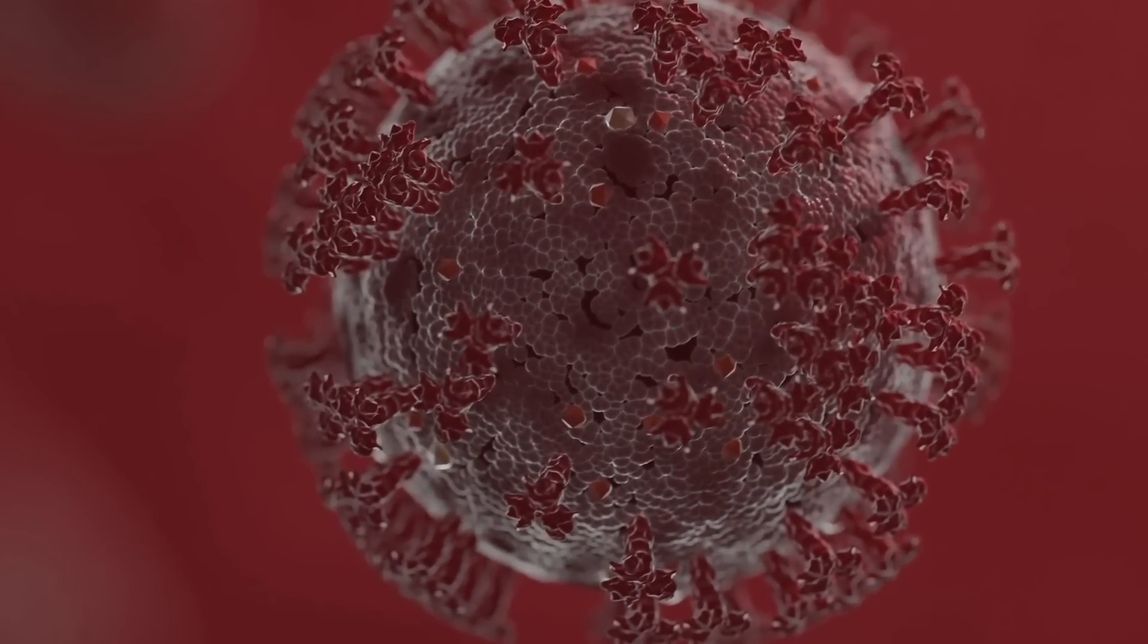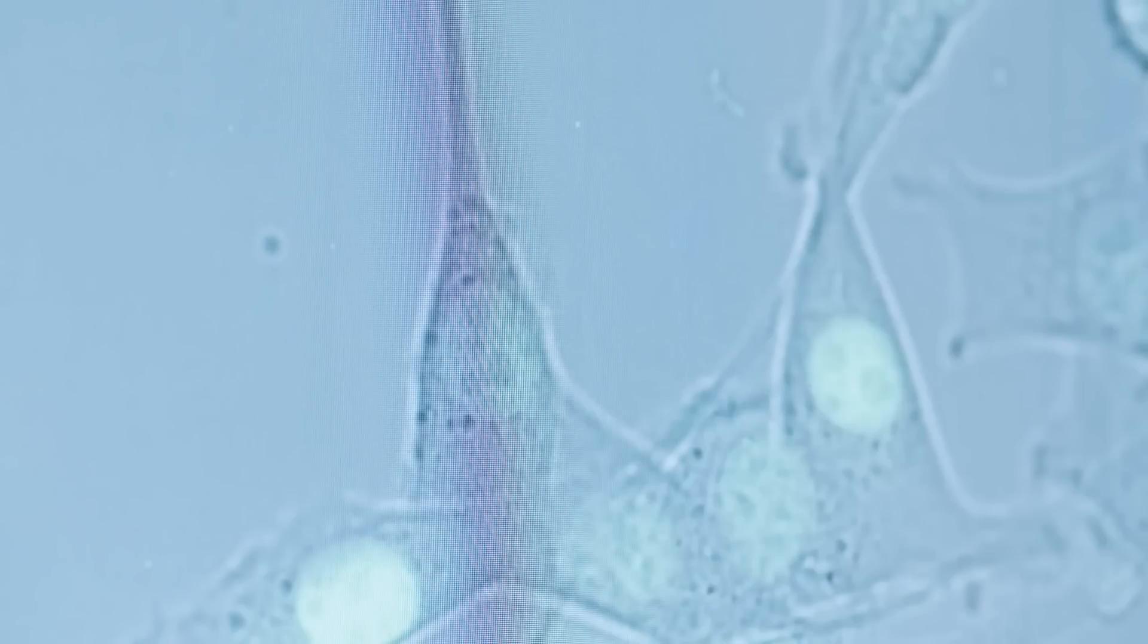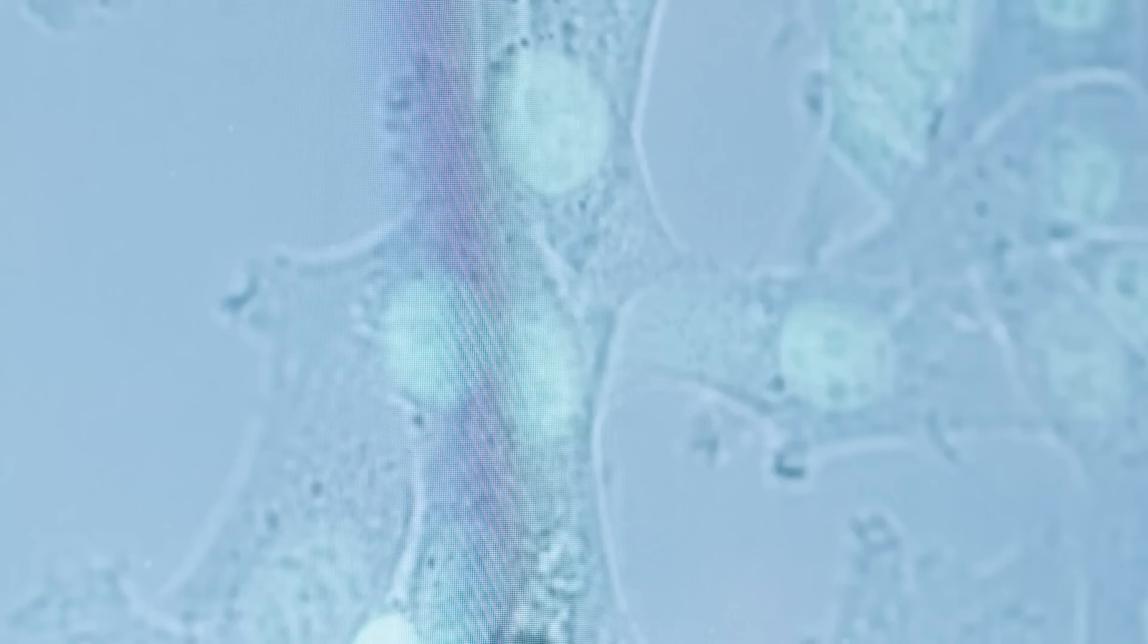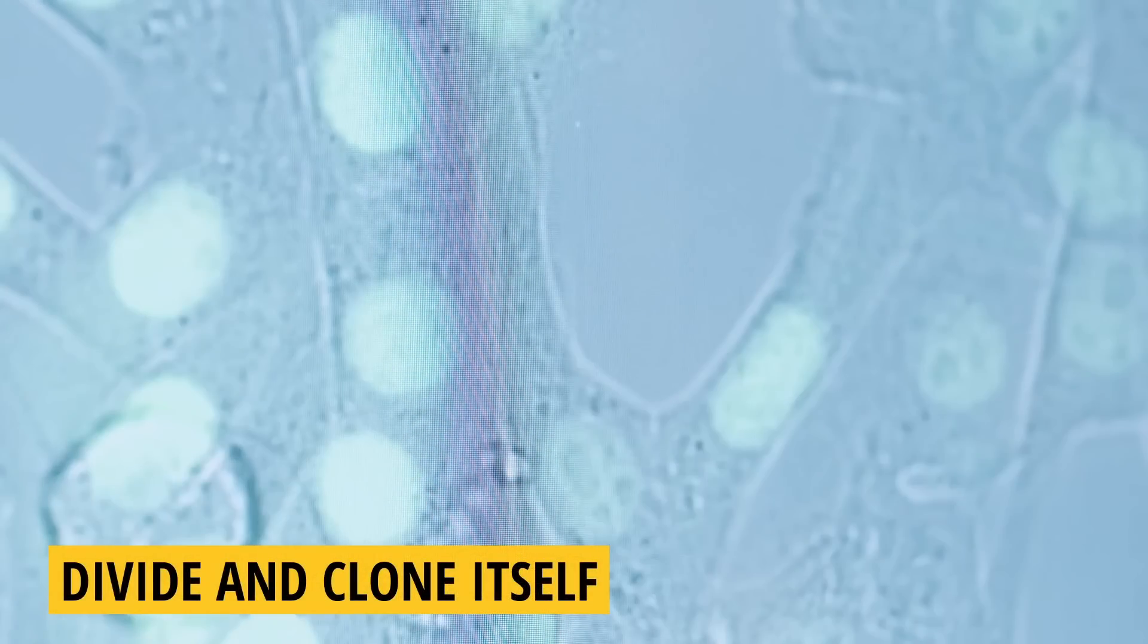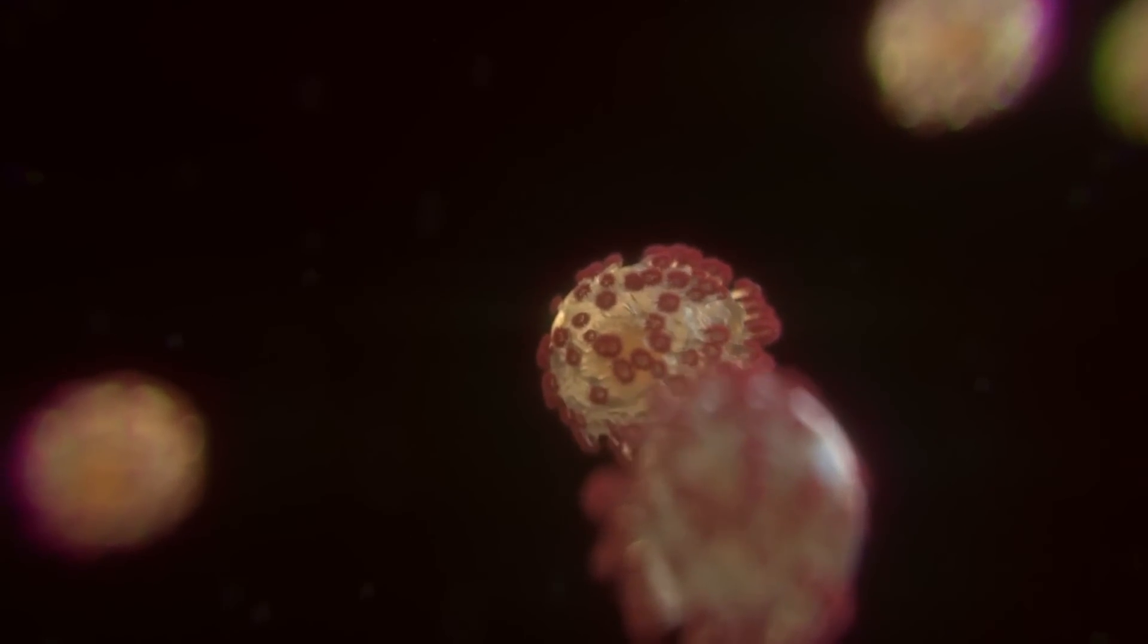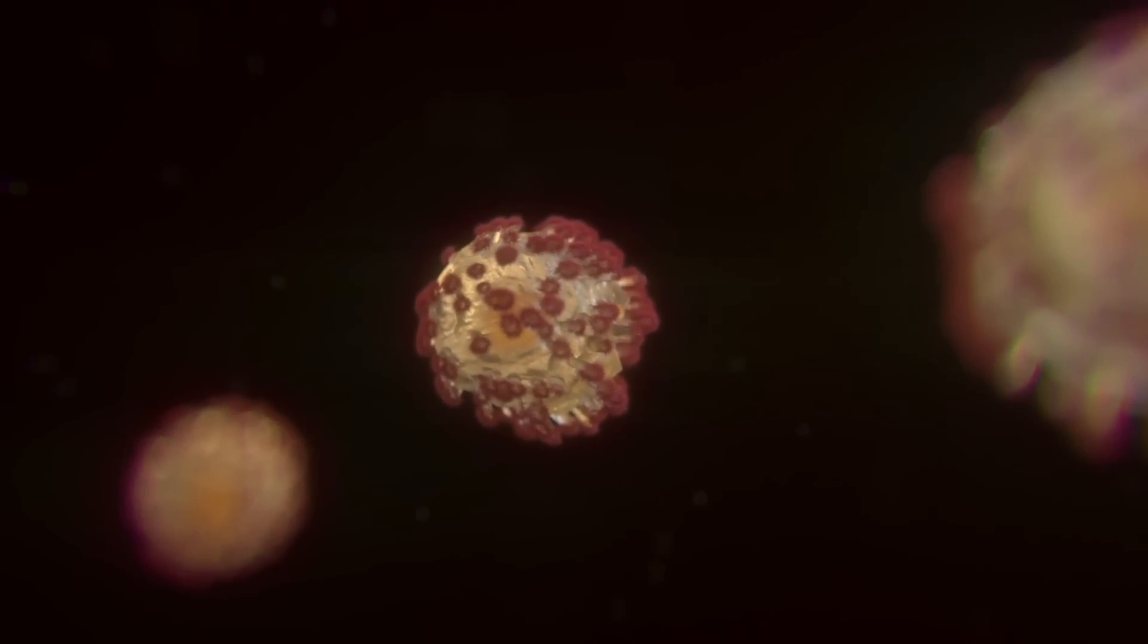But don't worry, our body has another mechanism that will regenerate cells. When a cell is close to death, it begins to divide and clone itself. A young version of the cell is generated, replacing itself to work, and then the old one dies.